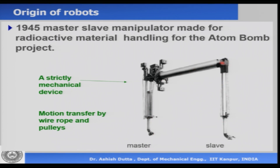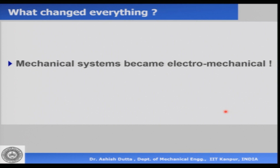In several atomic energy establishments, this master-slave manipulator is still used, because wherever they have to handle radioactive material, they have to operate at a distance. This is called a telemanipulator or telemanipulation — manipulation at a distance. In terms of history, this strictly mechanical device is attributed to the father of the robot, developed around 1945.